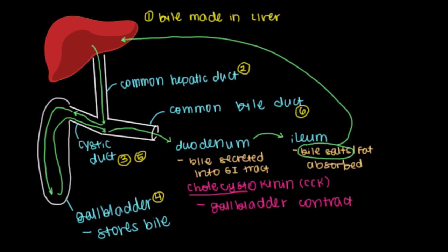The common bile duct is the last part of the biliary tree, which releases its contents into the duodenum. Finally, our bile has reached the GI tract. The bile salts will do their job to emulsify the fats we've eaten, and then the bile salts get reabsorbed in the ileum before heading back to the liver where they get reused. That's how our biliary tree works.